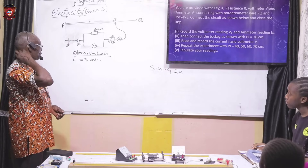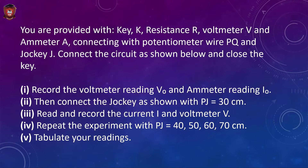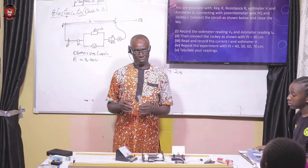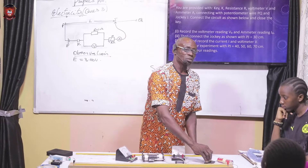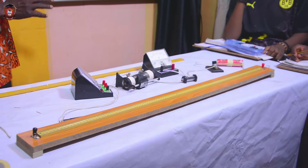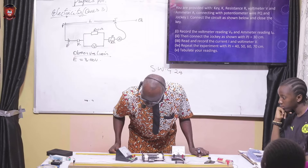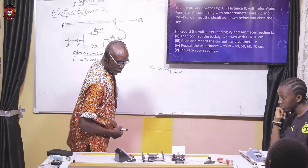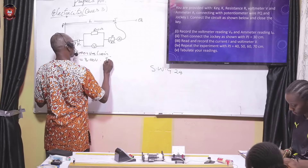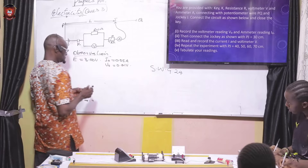So with this, the question now says: record the voltmeter reading V₀ and ammeter reading I₀. How do we record I₀? When the jockey is not in contact with anything — hence the jockey is not in contact — if we close the key, we record I₀ and V₀. So recording from here: I₀ equals 0.05 ampere, and V₀ equals 0.01 volt.